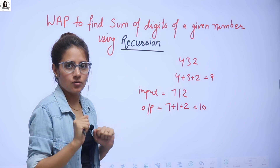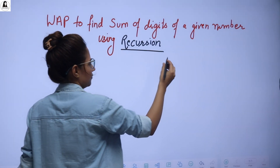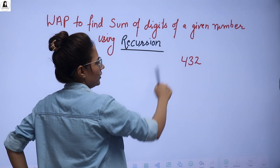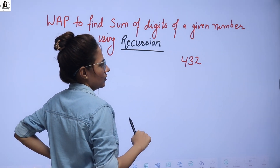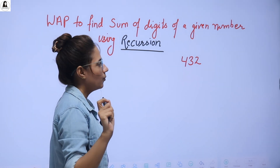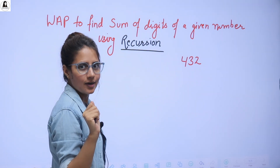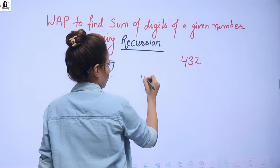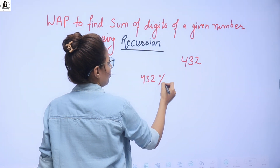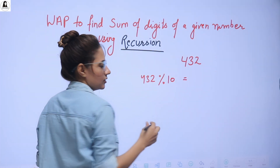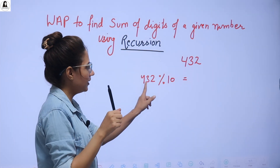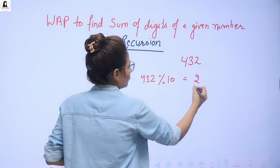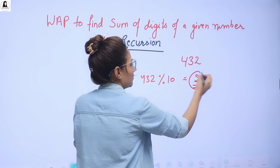Pause the video and try this out. See, if the number is 432, how will you find out the individual digits? We know the modulo operator is there. So if I divide this number — 432 modulo 10 — this modulo operator will give the remainder. So the remainder is 2. This will give me 2, and maybe I can store this number somewhere.